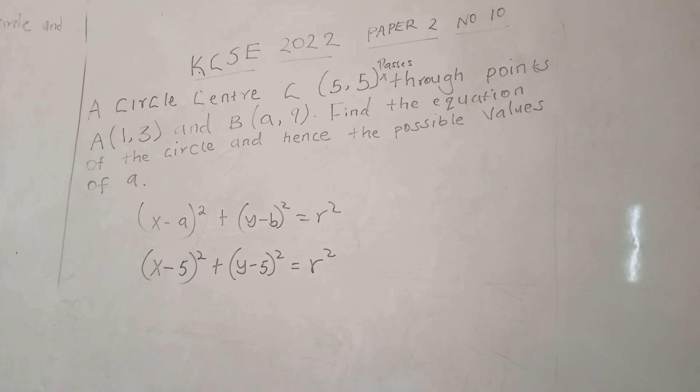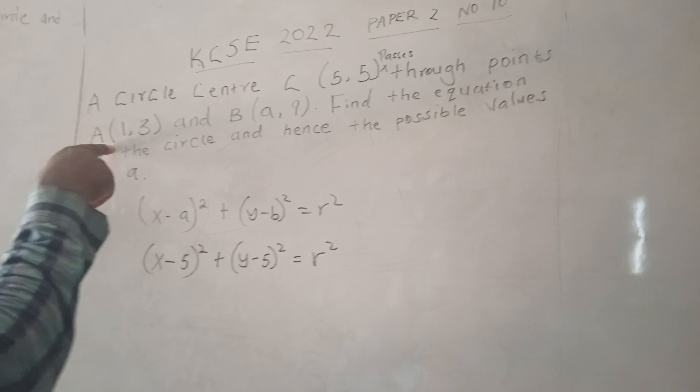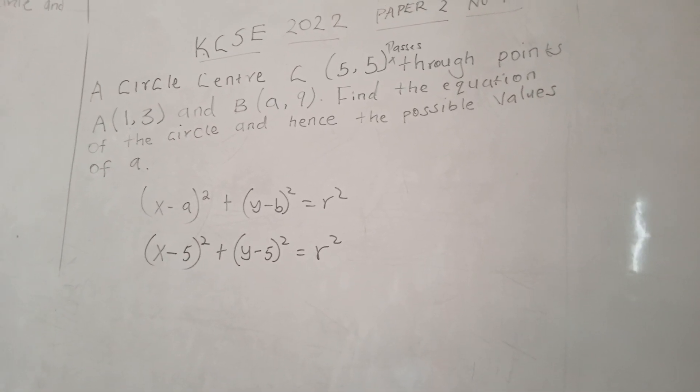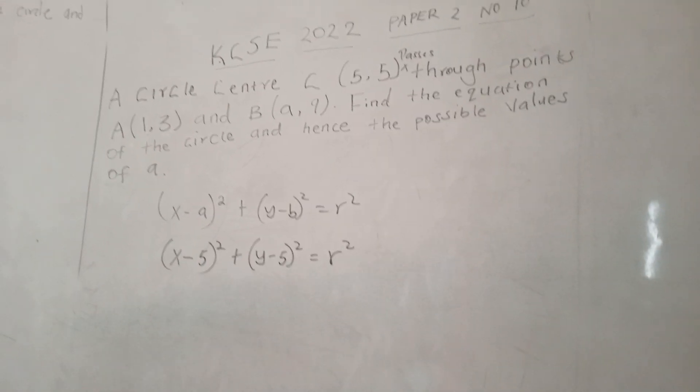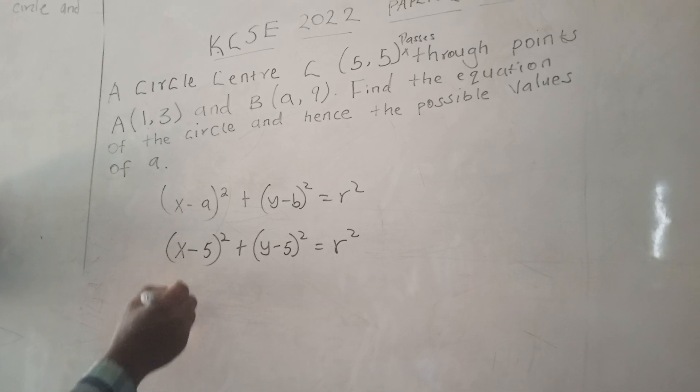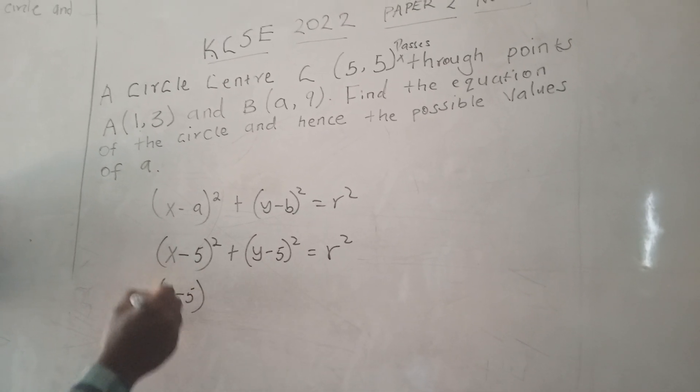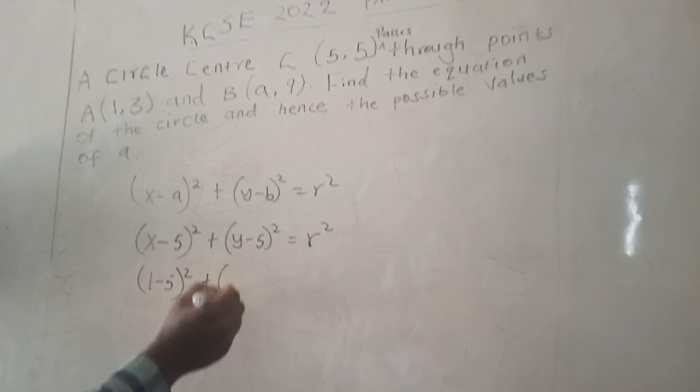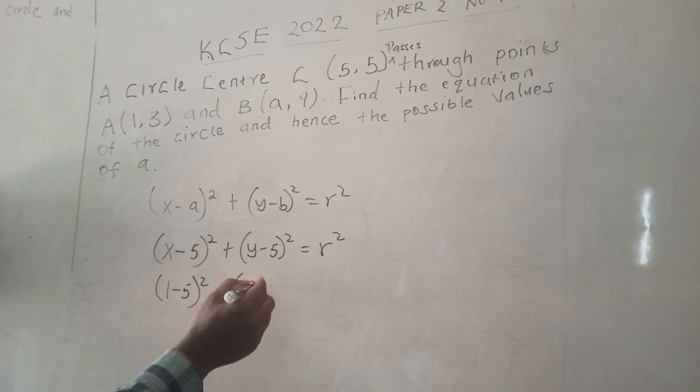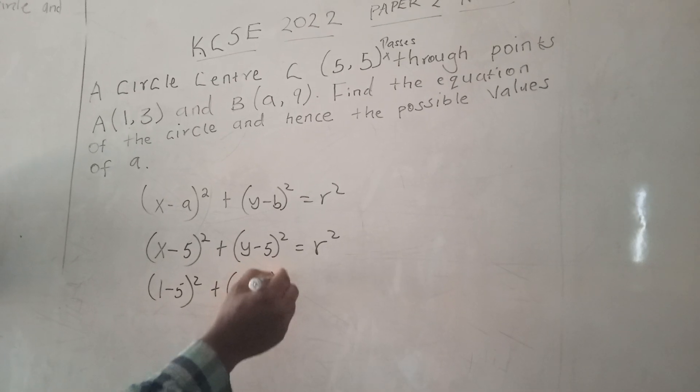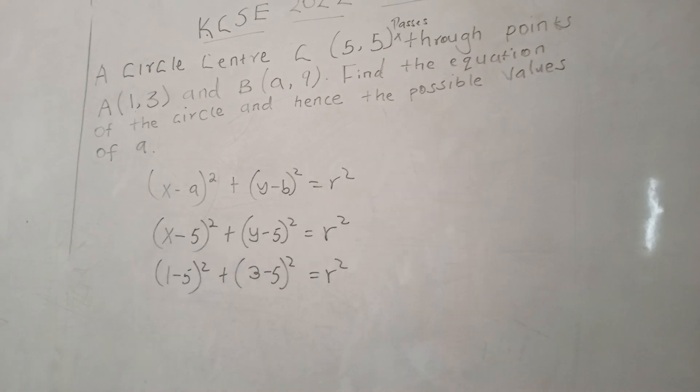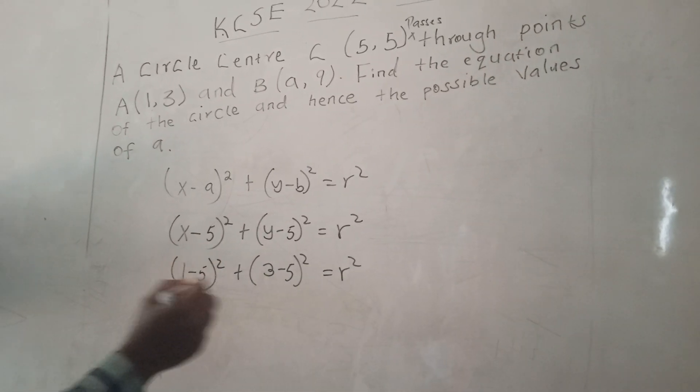For us to get the radius of this circle, we will substitute because we are told that this circle also passes through point A which is (1,3). So we are going to substitute our x with 1 and substitute our y with 3.